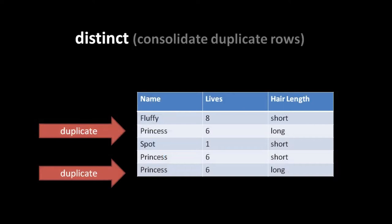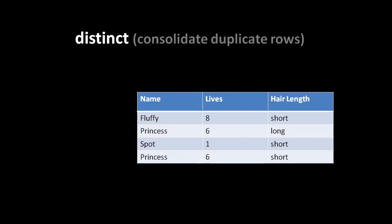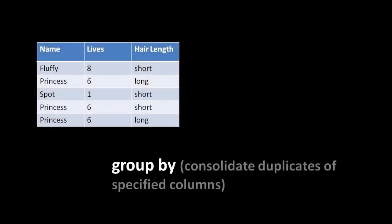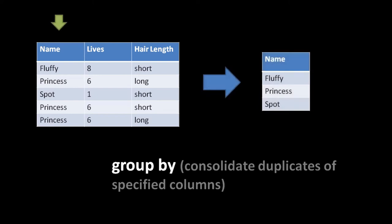In a table with two rows where the values in each column are all the same - say, two cats named Princess with 6 lives and long hair - if our query filters for distinct rows, these two rows consolidate into one. In other cases, it may be useful to consolidate rows that only match in certain columns. If we group on the name column, we're consolidating duplicate names, leaving us with just a name column.